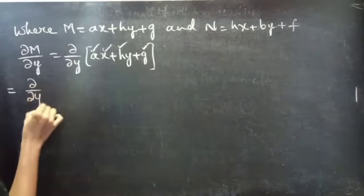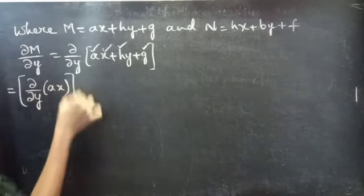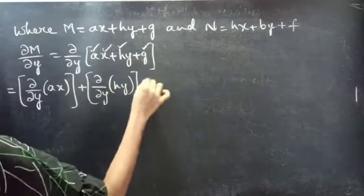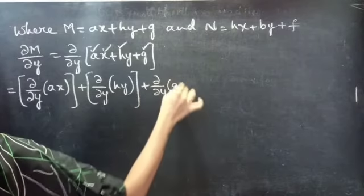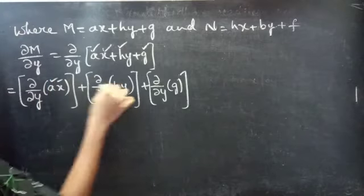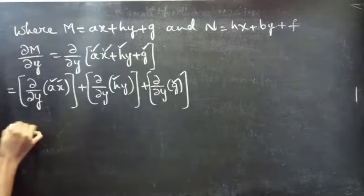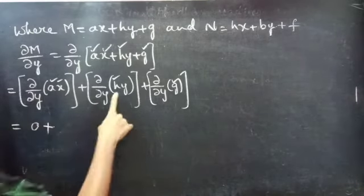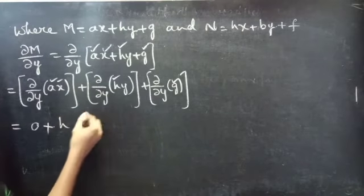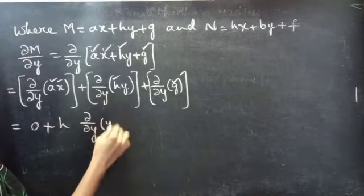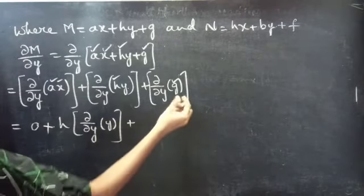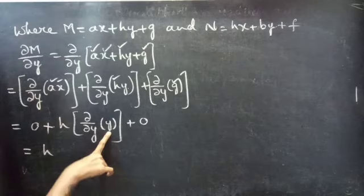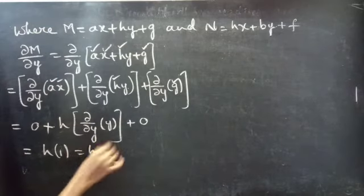So this equals dou/dou y of the first term plus dou/dou y of the second term plus dou/dou y of the third term. Since ax and g are constants, their partial derivatives are 0. We can write h as a constant times the partial derivative of y, so partial derivative of y with respect to y is 1, giving us h.